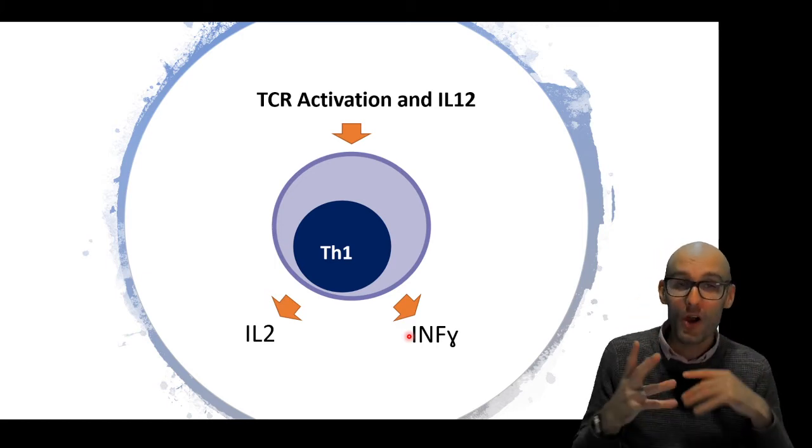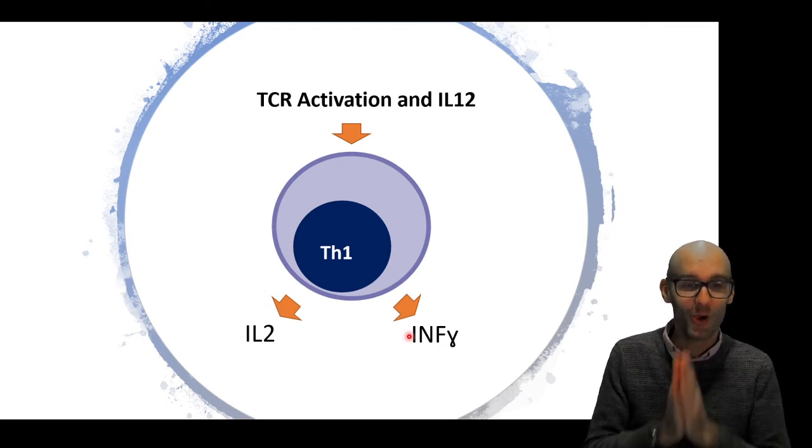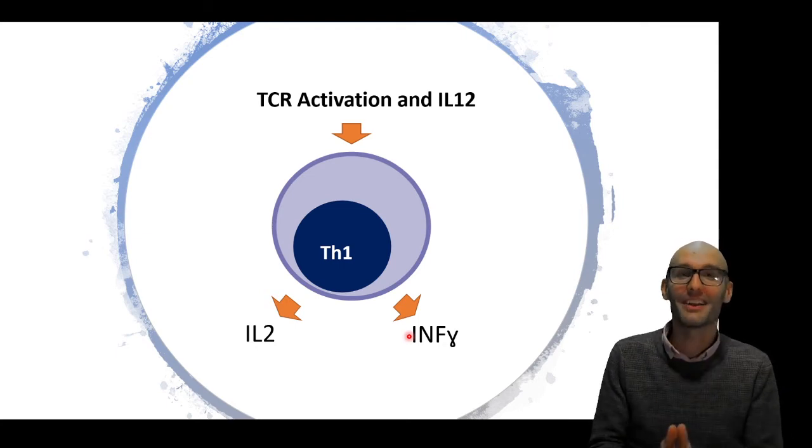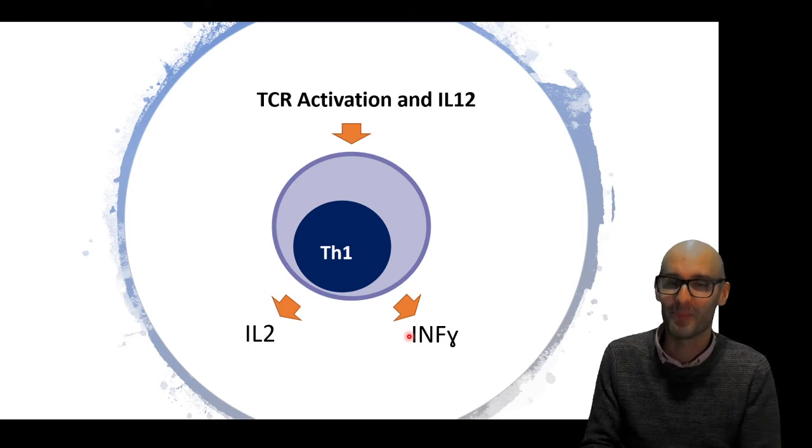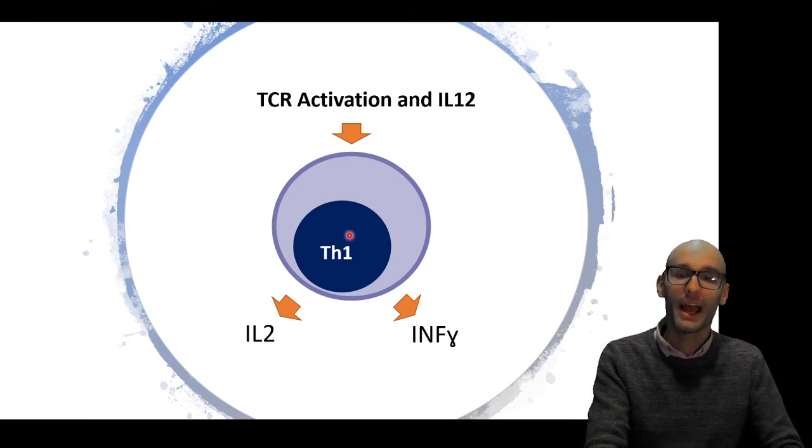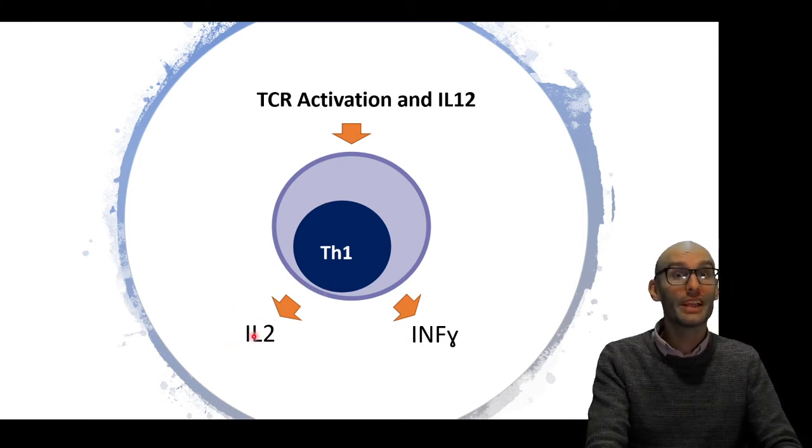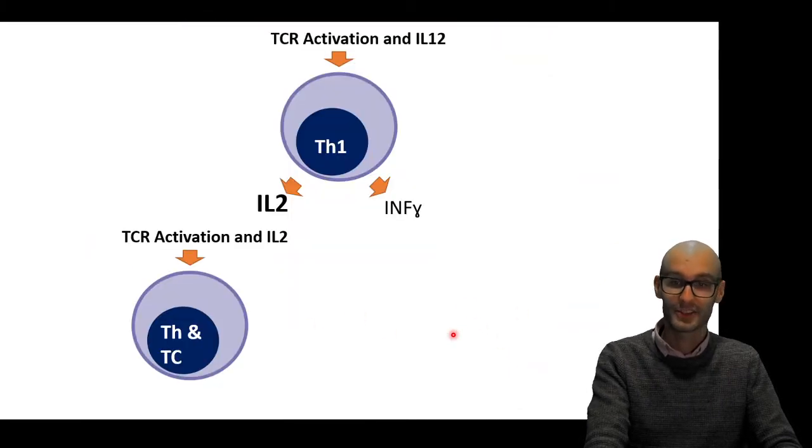And would you believe I've actually simplified it massively? So I know I'm hitting you with a lot of information, but just try, carry along, and I realize you'll probably have to go back to this video and back to the notes. So a TH1 cell is now producing interleukin-2 and interferon gamma.